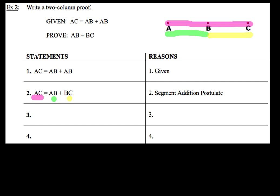Now for statement number three, one of the things I want to take a look at is statement number one and statement number two. Notice both of these have AC and so what I'm going to do is take each one of those separate pieces and set them equal to each other by the substitution property of equality. So AB plus AB is going to be equal to AB plus BC. So I'm just combining statements one and two using that substitution property of equality.